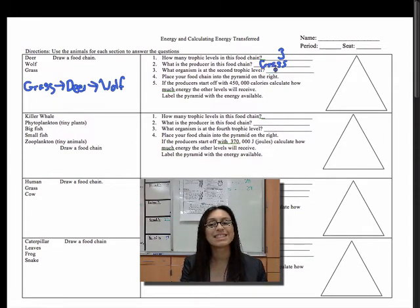Number three, what organism is at the second trophic level? So you look over here, we've got first level, second level. So the deer is at the second trophic level.